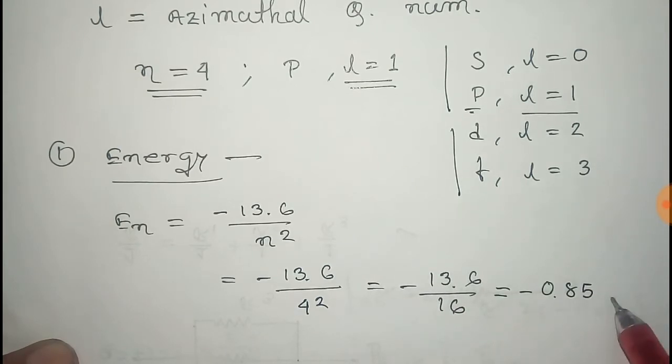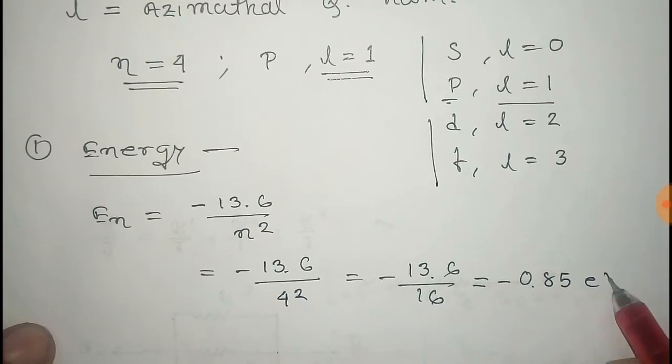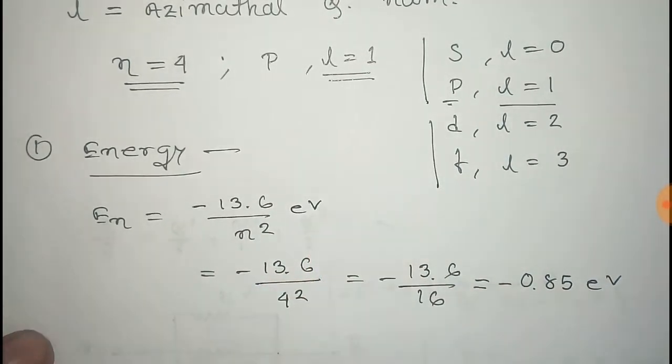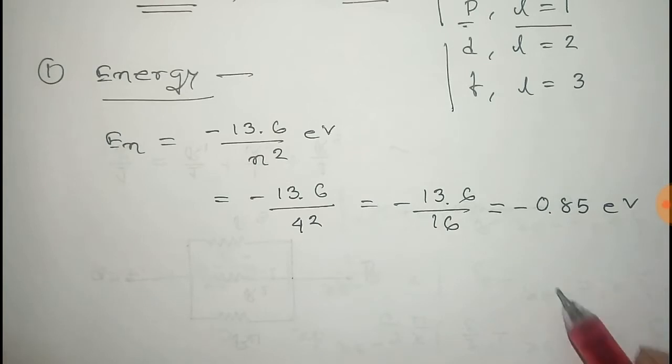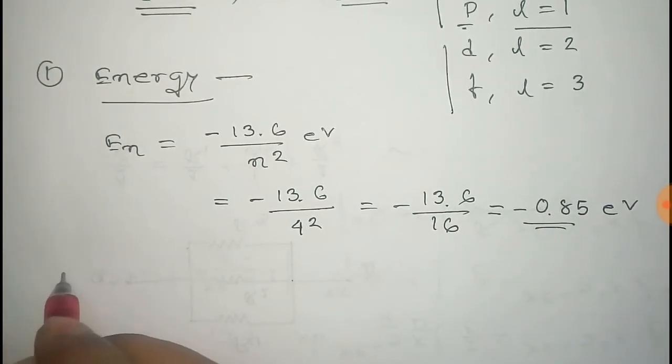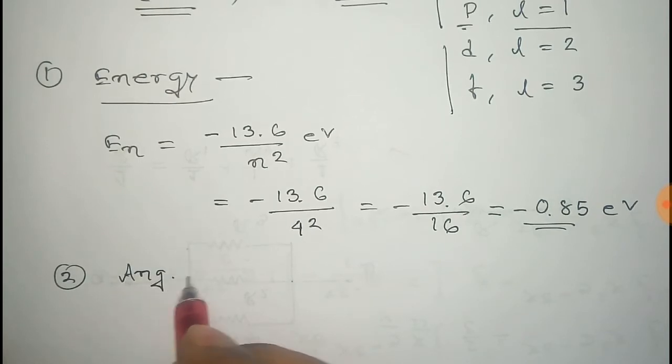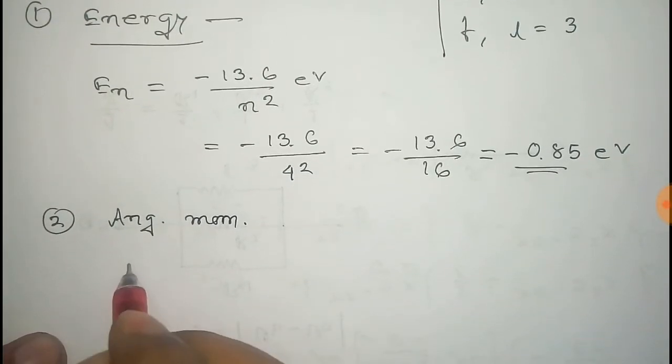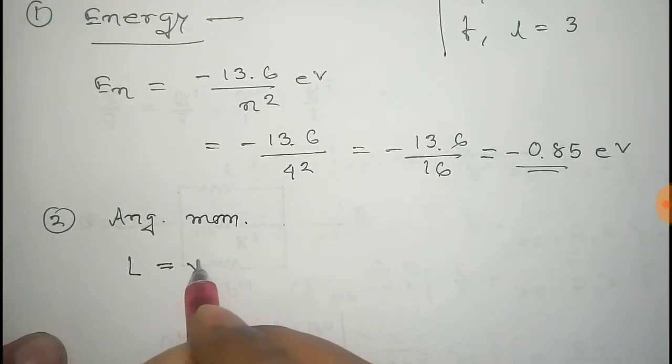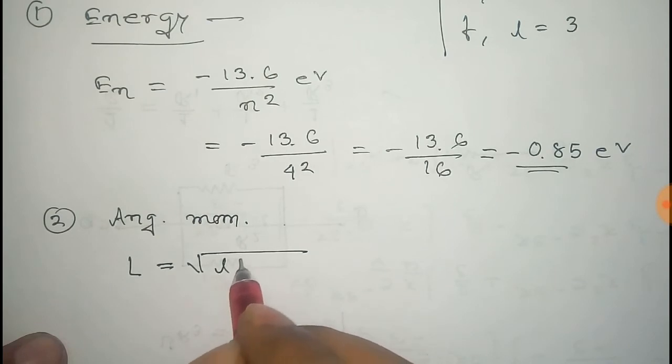Similarly, you can find the angular momentum. The formula for angular momentum is given by capital L equals square root of l times l plus 1, times h-bar.